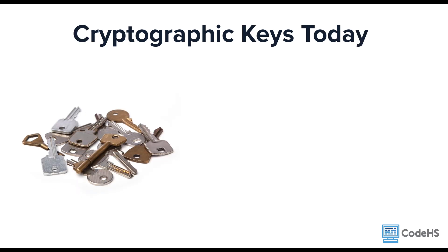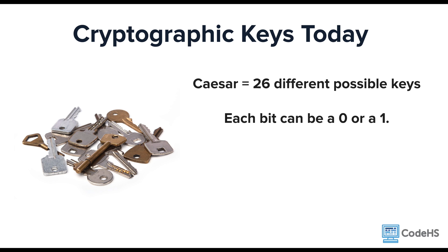Cryptography has obviously evolved since the time of Caesar and Vigenère. Caesar only had a choice of 26 different keys. Cryptography today measures keys in bits. A bit is like a place value. Each bit or place value can be a zero or a one.